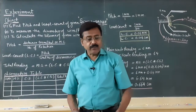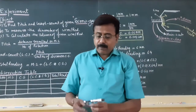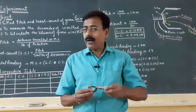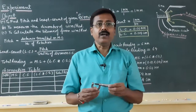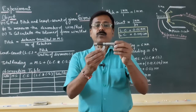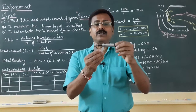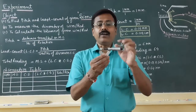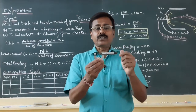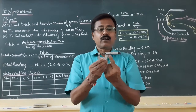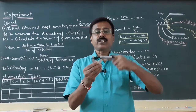The screw gauge is a very well-modified device. We can measure up to the 100th part of a millimeter and the 1000th part of a centimeter. This device consists of three parts: the main screw, the main scale, and the circular scale.